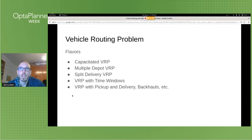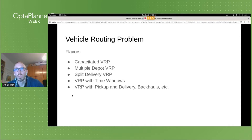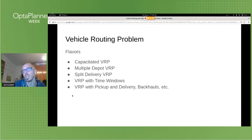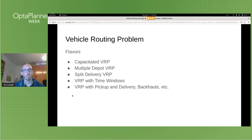Formally, it is a combinatorial optimization problem that seeks to service a number of customers with a fleet of vehicles. But this is just the basic form. In real life, each use case comes with a unique set of additional constraints. VRP is a generic term covering a whole class of vehicle routing flavors, such as capacitated VRP where vehicle capacities are limited, multiple depot VRP where the vehicle fleet is distributed over a number of depots, and split delivery VRP where the same customer is allowed to be served by different vehicles.